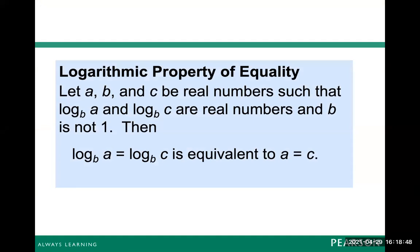We're going to use a few different properties in this chapter to solve exponential and logarithmic equations. The first one is the logarithmic property of equality. This also uses the fact that logarithmic functions are one-to-one. So if a, b, and c are real numbers such that log base b of a and log base b of c are real numbers — in other words, they're defined — and b does not equal one, then log base b of a equals log base b of c is equivalent to a equals c.